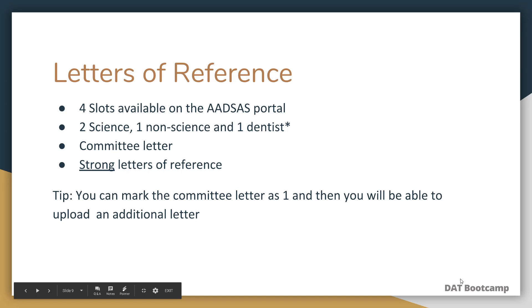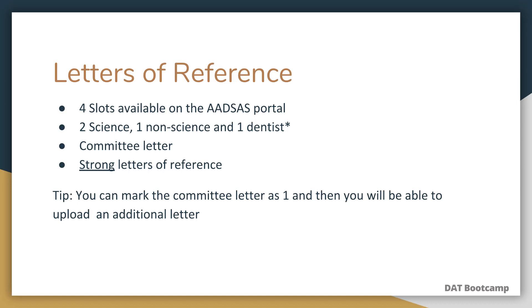Now let's talk about letters of reference. There are four slots available on the ADSAS portal to upload letters. To cover your bases at most schools, you're looking for two science professor letters, one non-science professor letter, and one dentist letter. However, every school has different requirements — Columbia University wants three science letters, while other schools may be fine with just two faculty letters, science or non-science. It's important to reference the ADSAS portal to confirm you meet the requirements for every program you apply to.